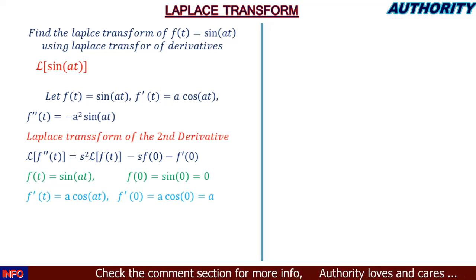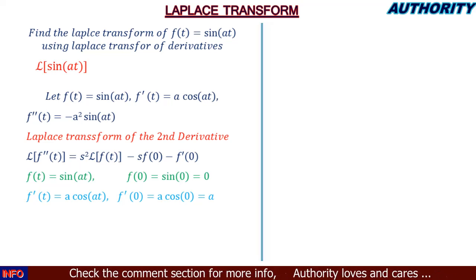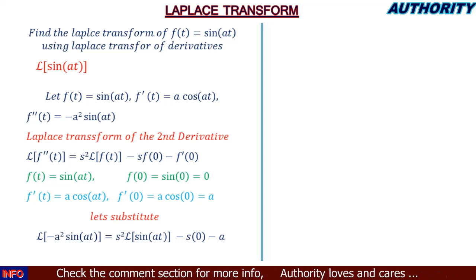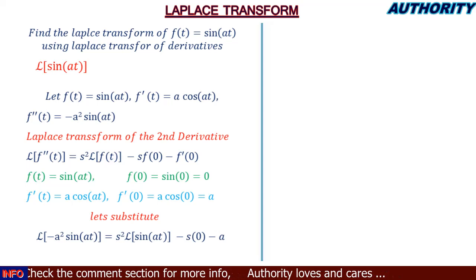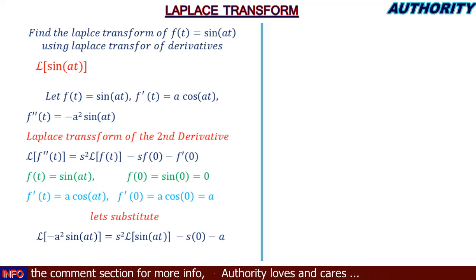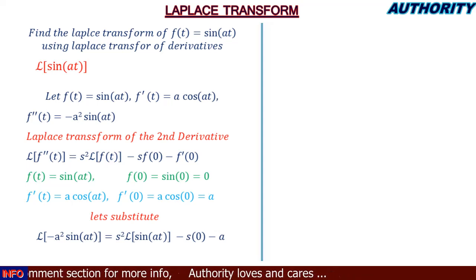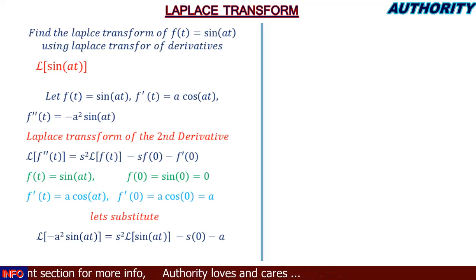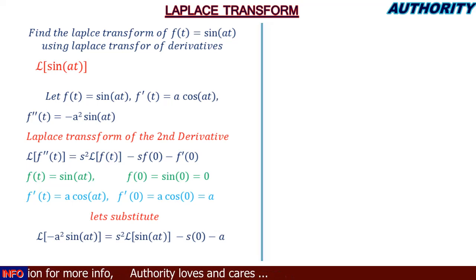Now substituting into equation one: f''(t) = −a²·sin(at), so we write L{−a²·sin(at)} = s²·L{sin(at)} − s·f(0) − f'(0). With f(0) = 0 and f'(0) = a, this becomes: L{−a²·sin(at)} = s²·L{sin(at)} − a.